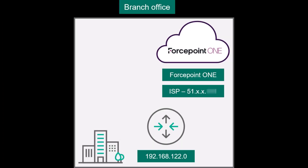In this environment, the Juniper router is connected to the internet with a static public IP address provided by the internet service provider. The systems of the site are on the 192.168.122.0 private network, which is the internal subnet added during the site configuration.